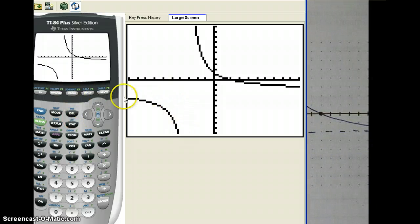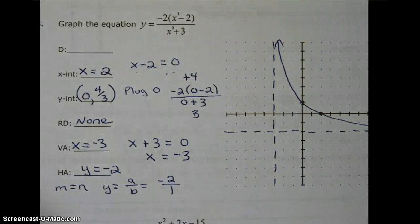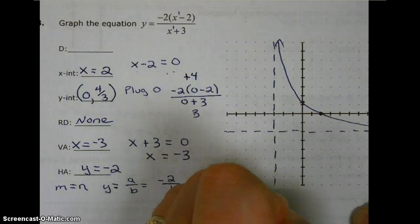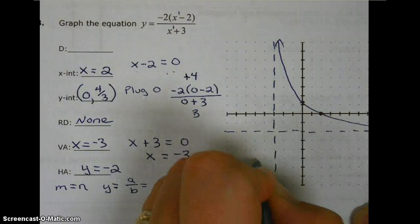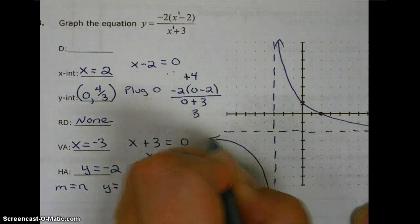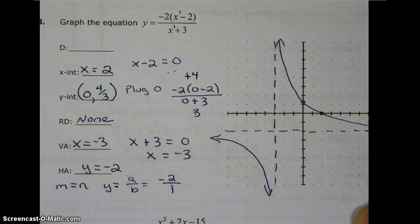So we know the second part of the graph is going to be down here. So going back, the second part is going to be down here.